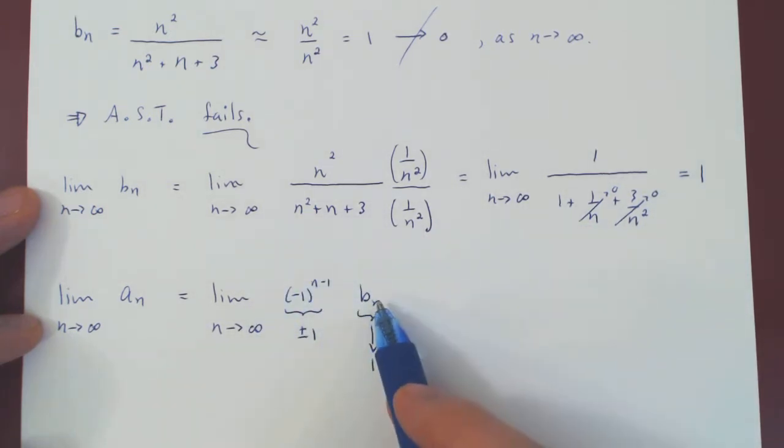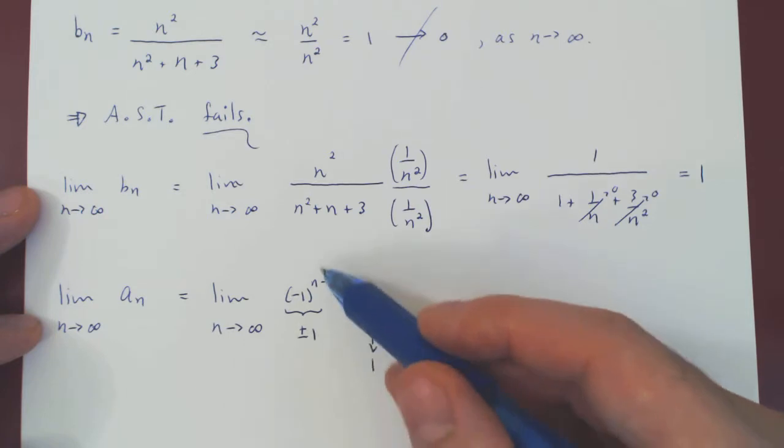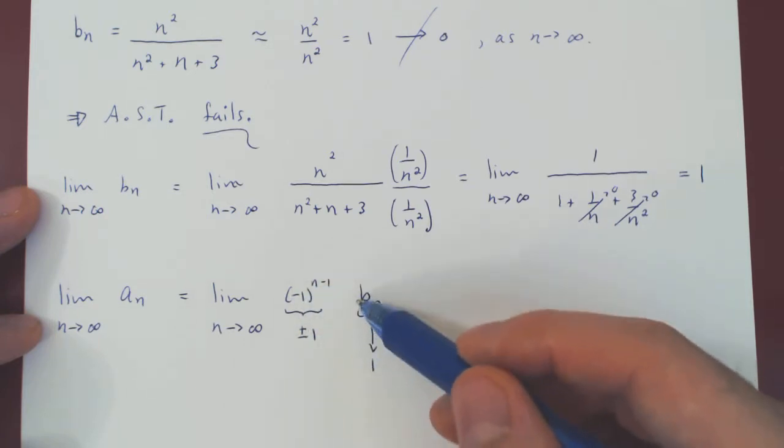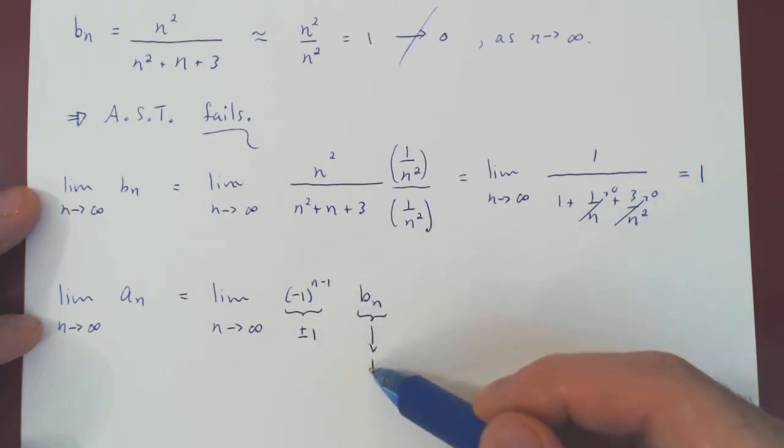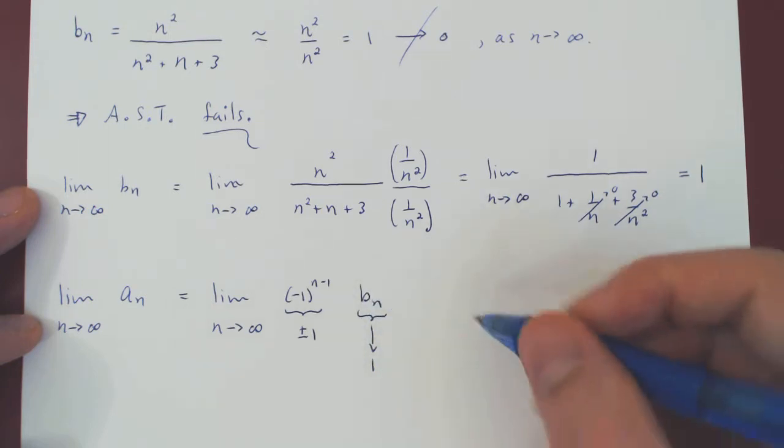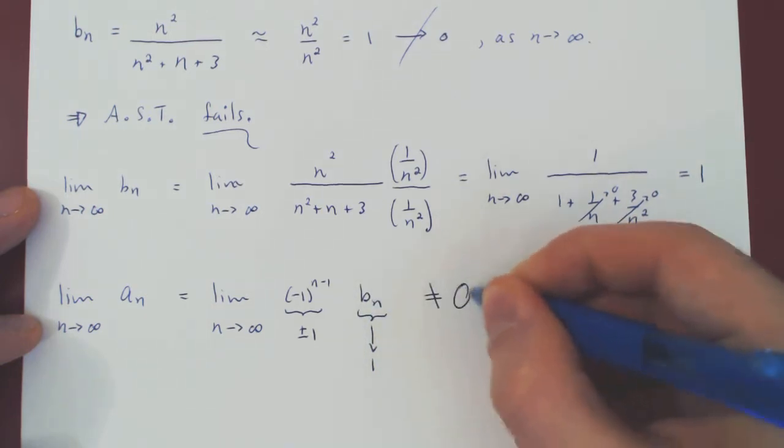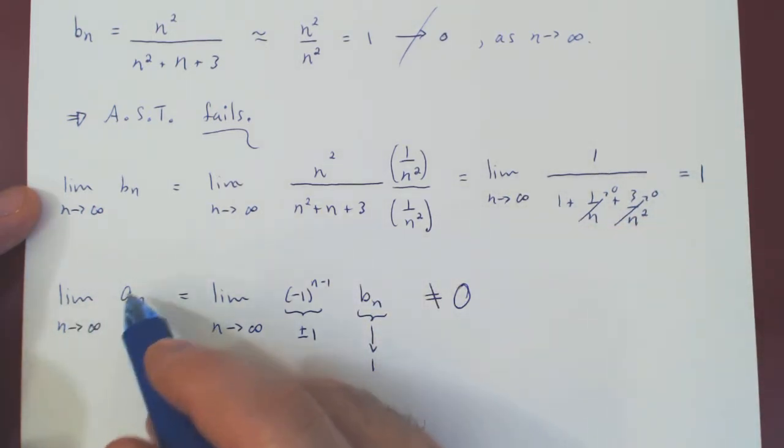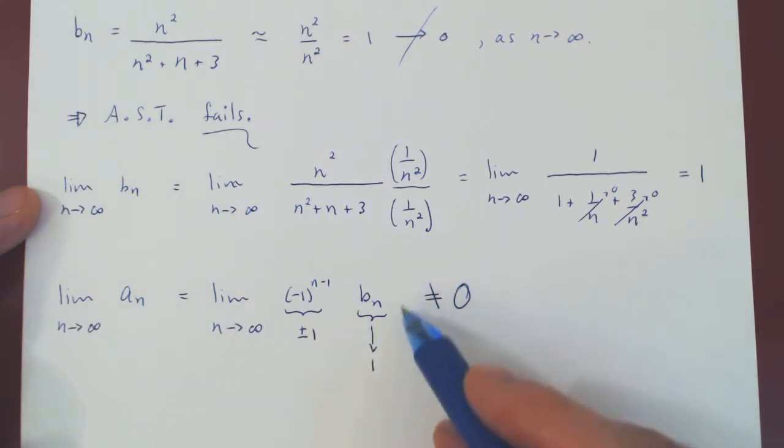So, we have a sequence where a part of the multiple is plus or minus 1 times something which is getting closer and closer to 1. Well, plus or minus 1 times something which converges to 1 clearly does not converge to 0. So, the limit of an, as n goes to infinity, is not equal to 0.